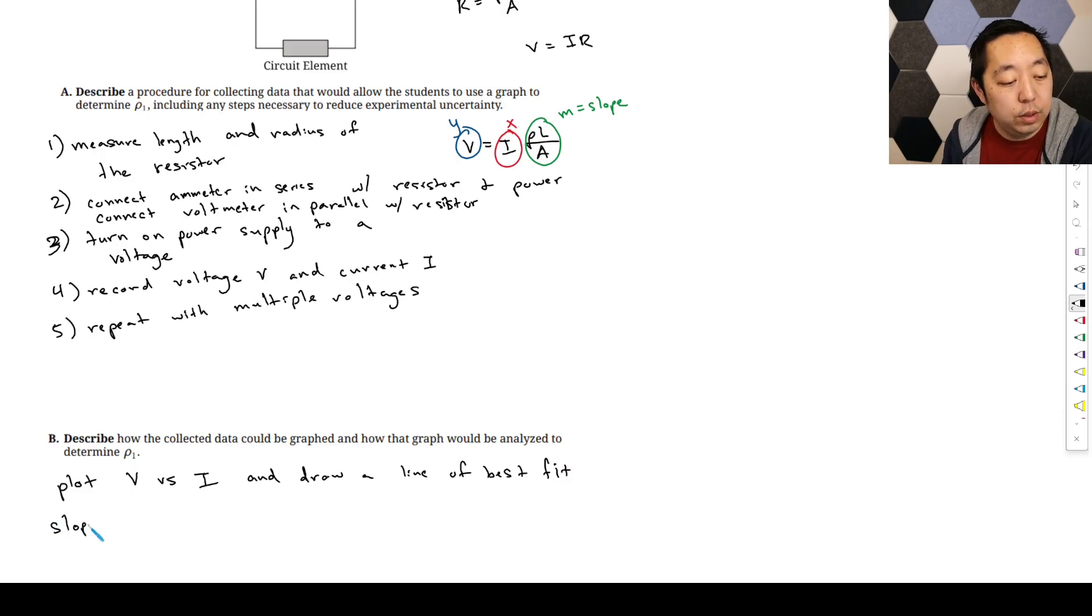The slope will equal ρL over A, which is going to be ρL over πR². So we can solve for ρ from the slope calculation. That's it, that's all you have to say.